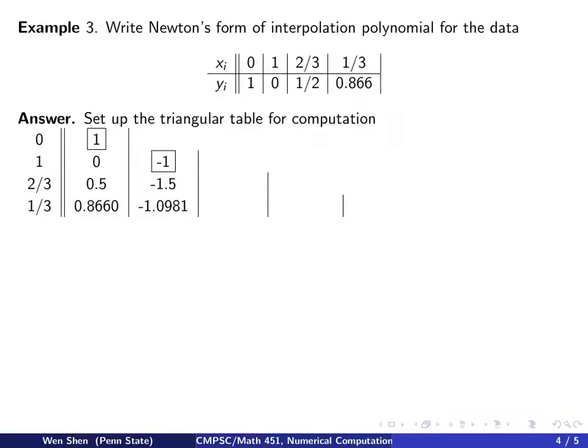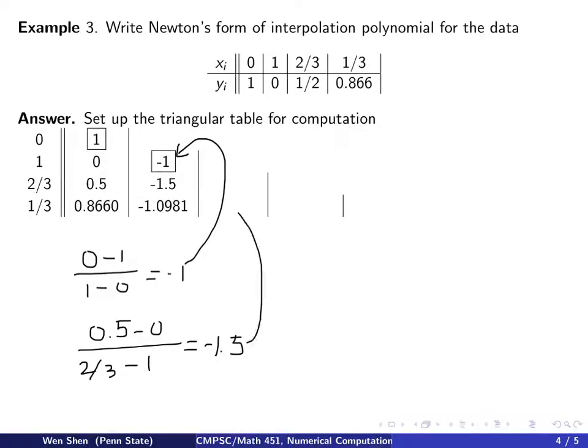Now we are ready to compute the next column. How is this number negative 1 computed? The negative 1 here is computed by taking this minus that over this minus that. So it will be 0 minus 1 over 1 minus 0, which is negative 1, and that's the number that goes in here. And then for the next one, we'll be doing 0.5 minus 0 over 2/3 minus 1. And you work out that number, it's negative 1.5, which goes here.